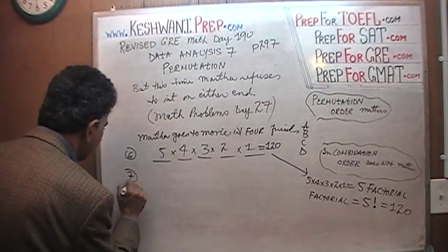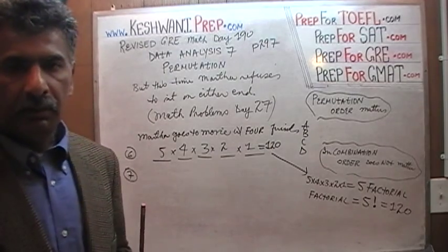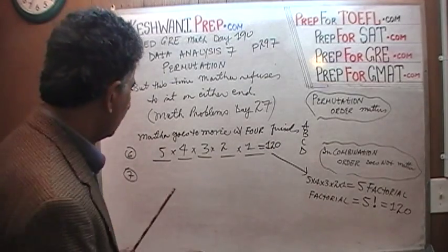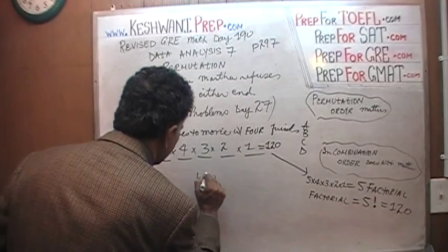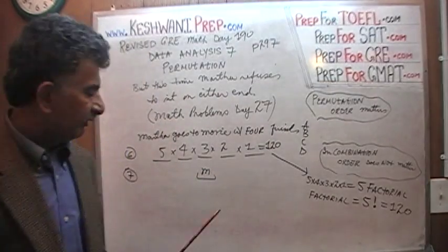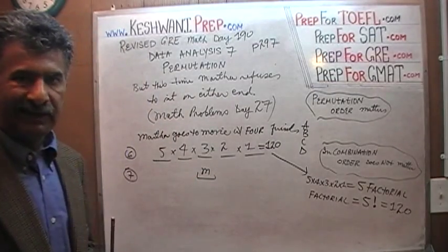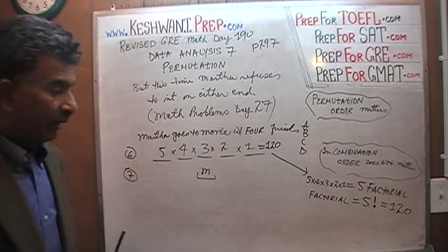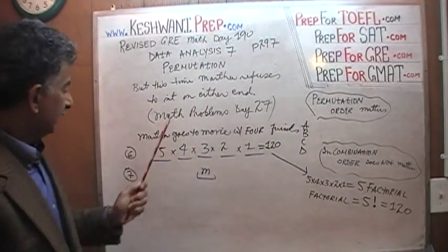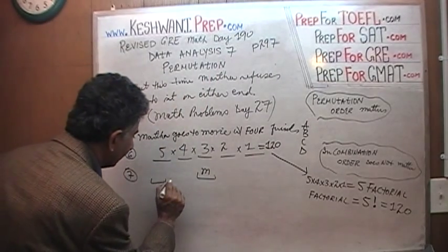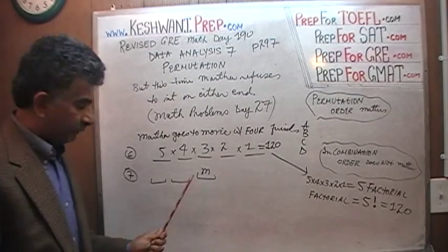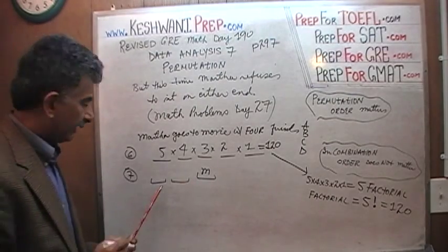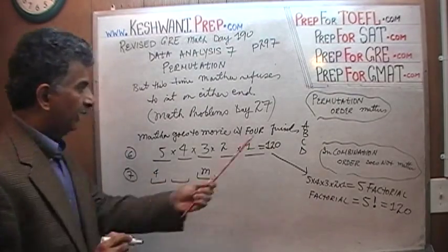In question number 7 a condition was put upon us. We were told that Martha must sit in the middle. If Martha is hell bent on sitting in the middle, now how many choices do we have? And we found yesterday on day 189 that if Martha sits in the middle then we only have 4 people left for the first spot.